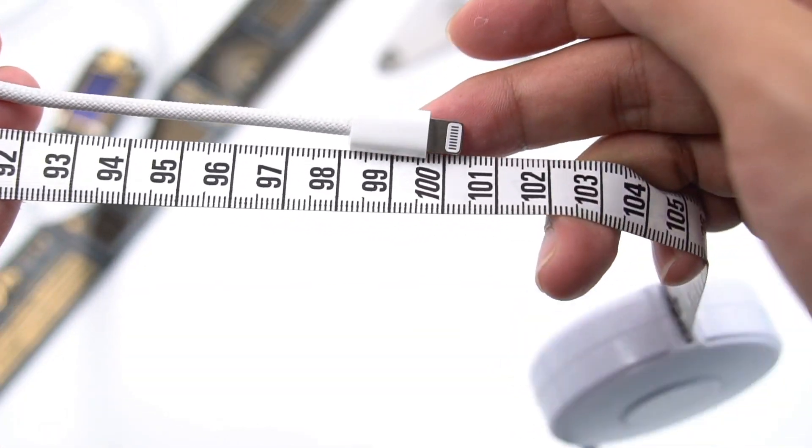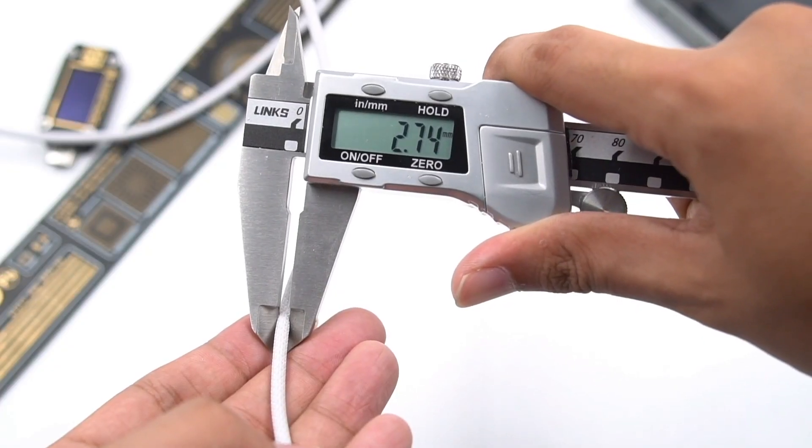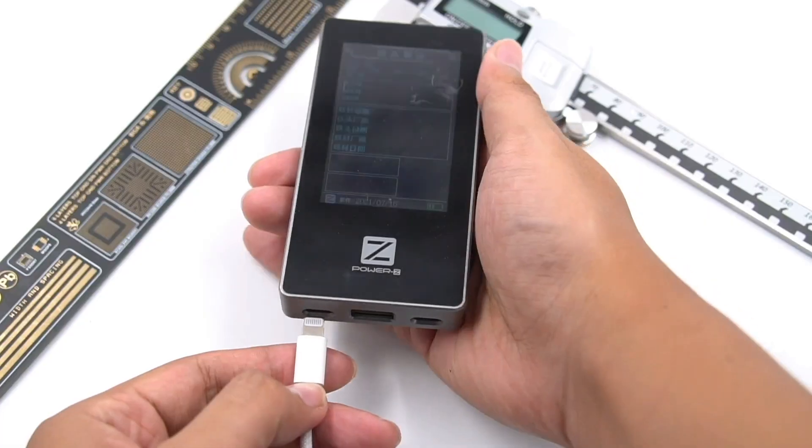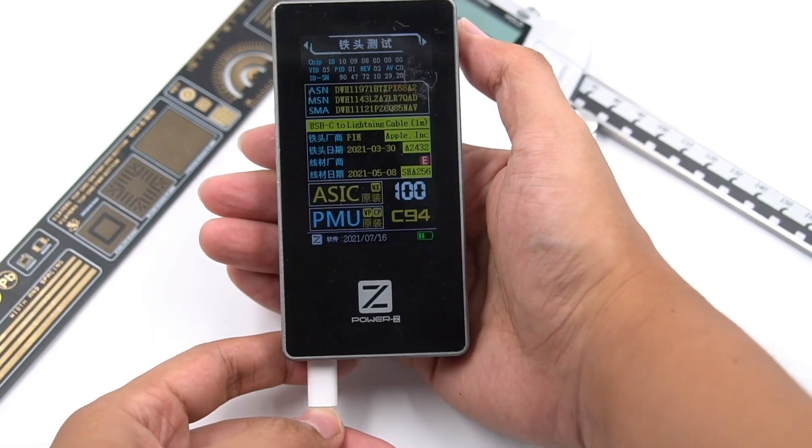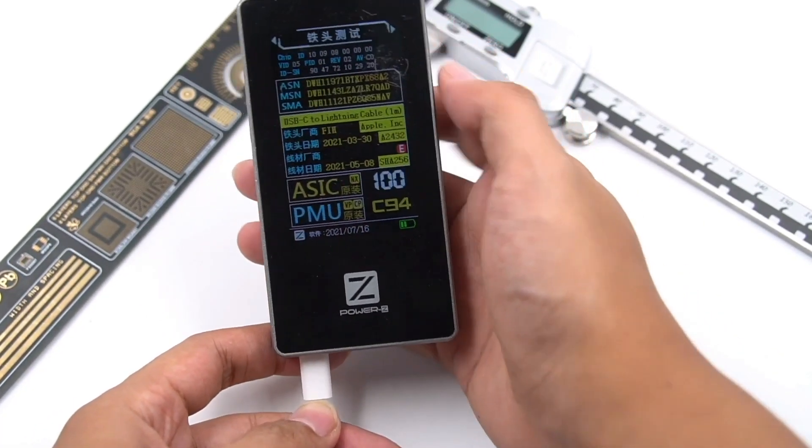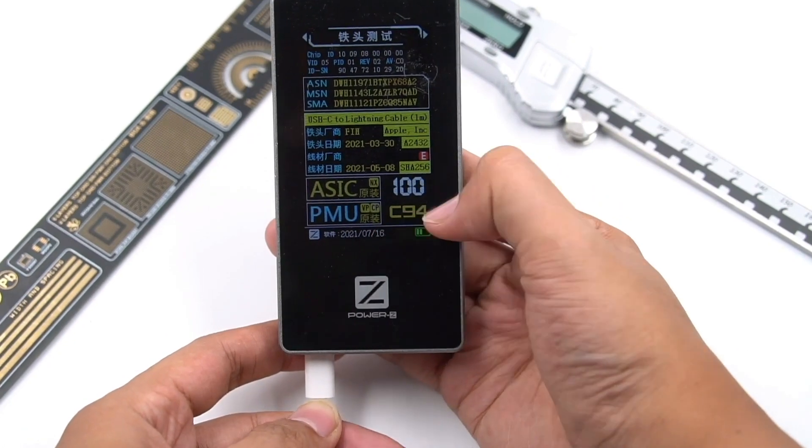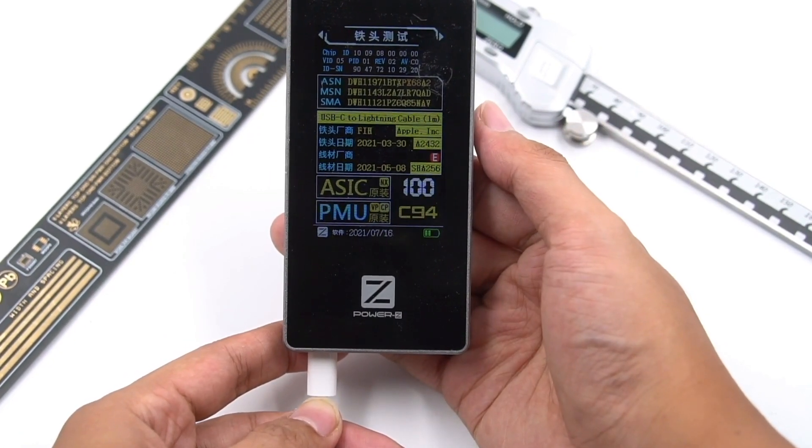The cable length is about 1 meter and the diameter of the cable is about 2.7mm. Use ChargerLab PowerZ MF001 to test the cable. The result shows it's 100% genuine and the port is C94.